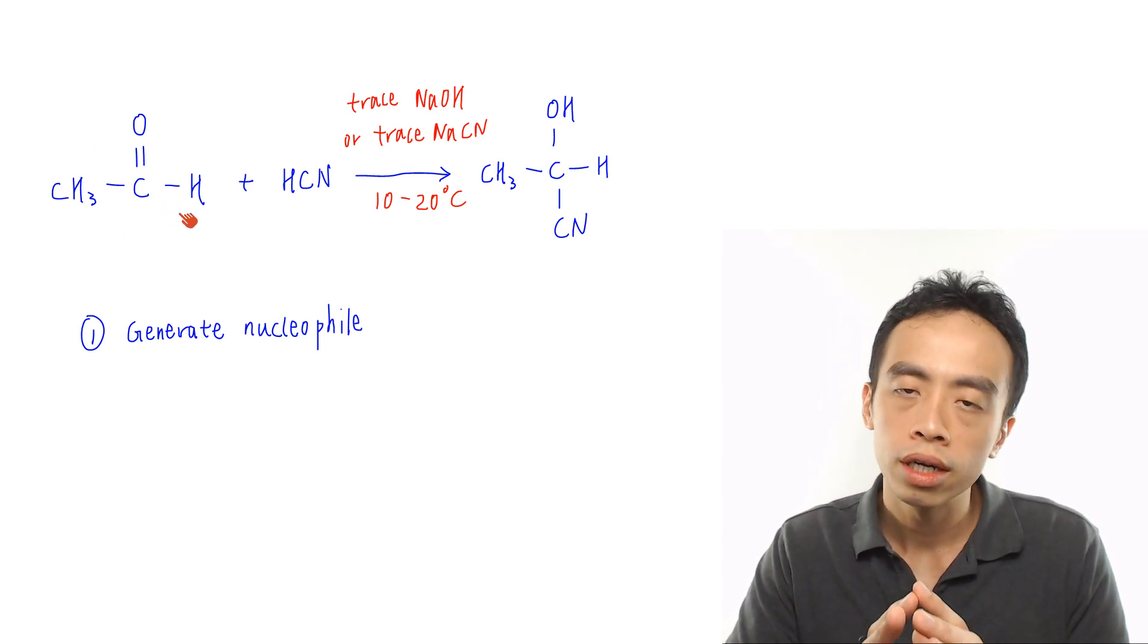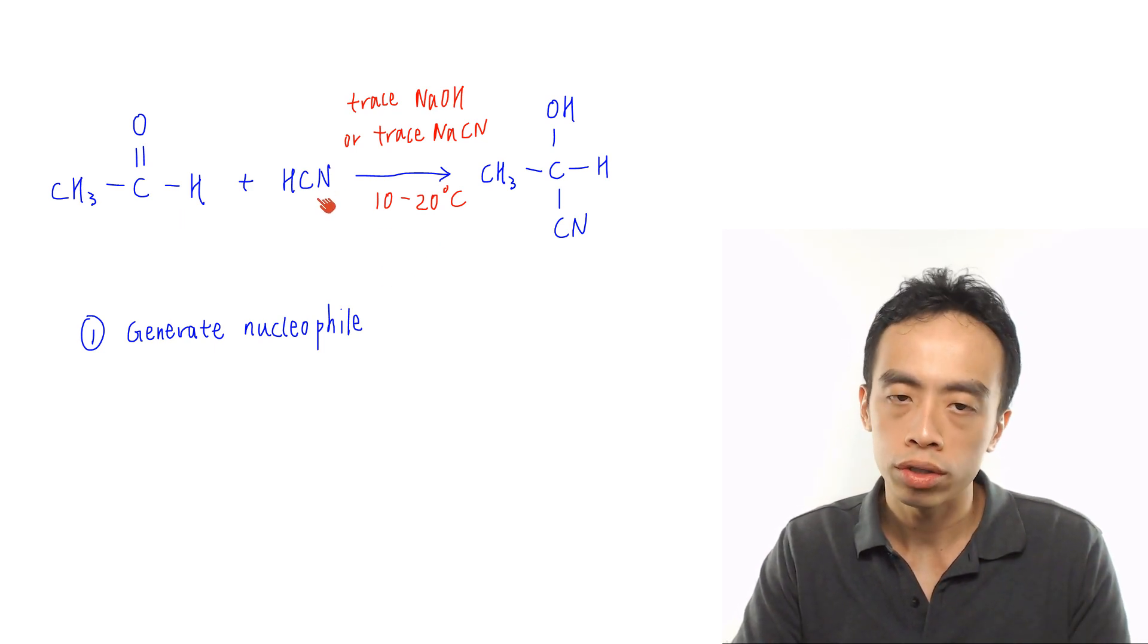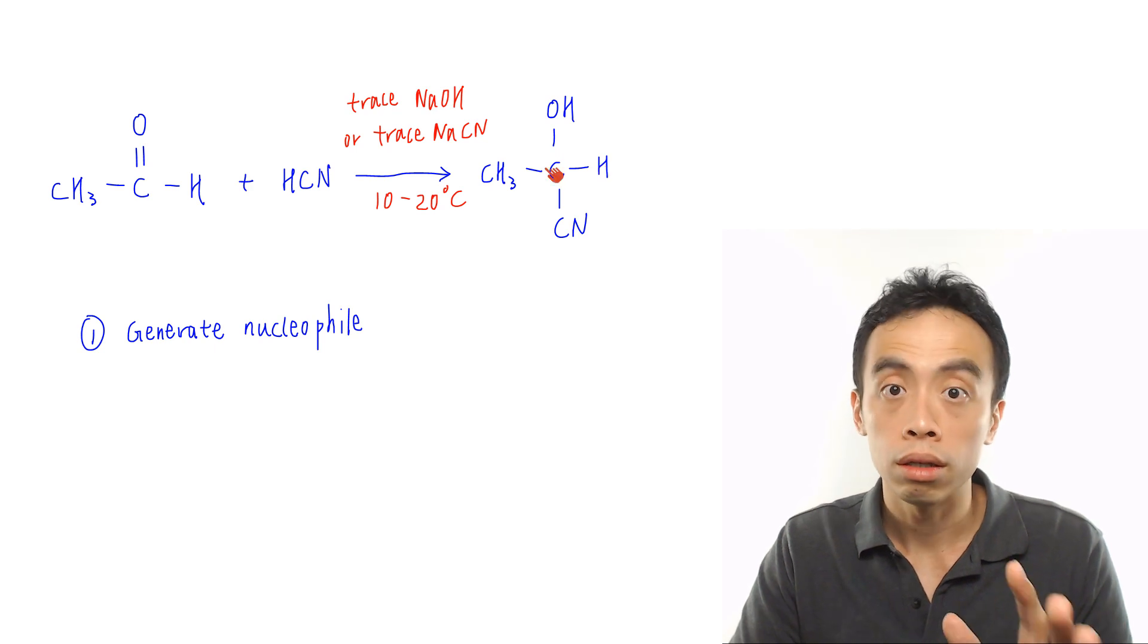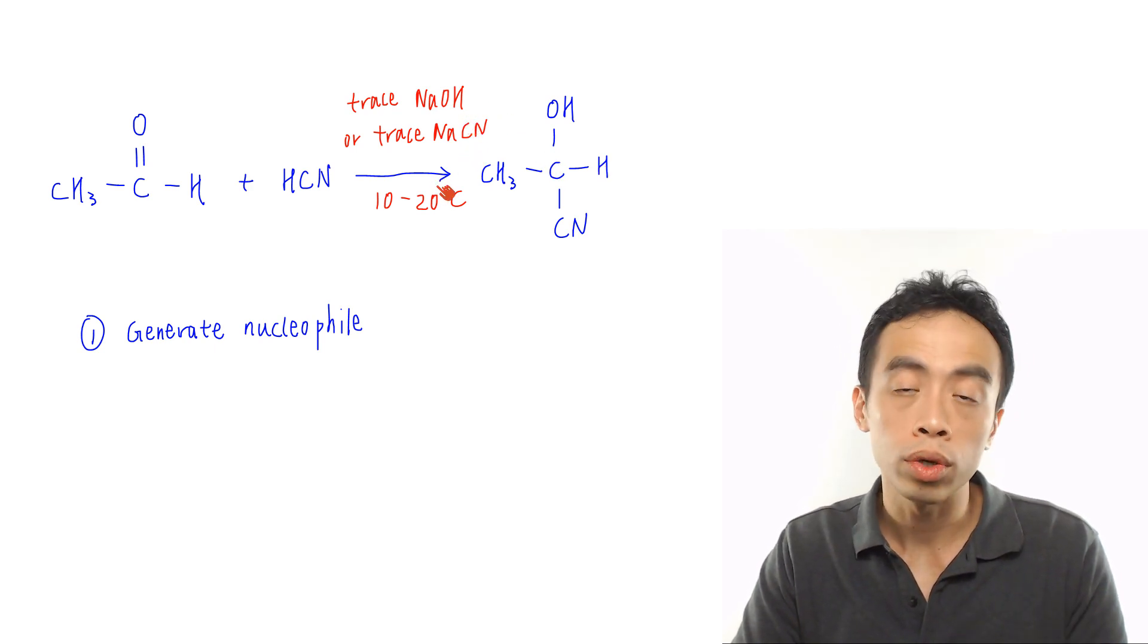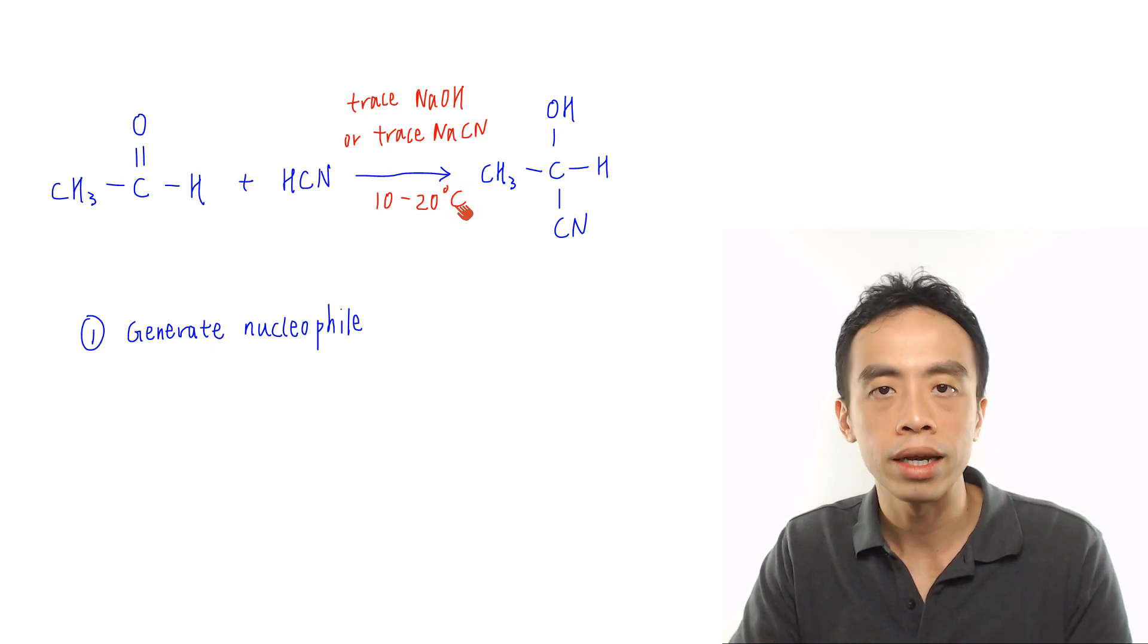For ketones, the mechanism is exactly the same, reacting with HCN to give us this product, cyanohydrin. This reaction is done using trace NaOH or trace NaCN at 10 to 20 degrees C. Let's run through the mechanism.